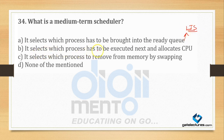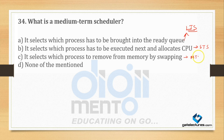It selects which process has to be executed next and allocates CPU — this is the short term scheduler. It selects which process to remove from memory by swapping — this is the medium term scheduler. Swapping and swap out ka matlab: swap out matlab koi process RAM se hard disk mein bhejna. Agar koi process hard disk se RAM ke andar laya jaye, isko bolte hain swap in. So C is the right answer for this question.